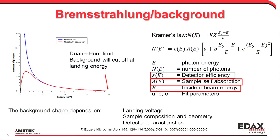The model tells us that the background shape depends on the incident beam energy — when you change your acceleration voltage, you change your background. It changes depending on the sample composition as well; sample self-absorption plays a role in the background itself, and that's where we get information about the sample. This absorption also changes a little bit with geometry, which we'll show in a few slides.